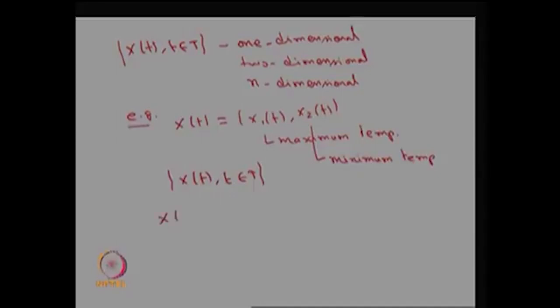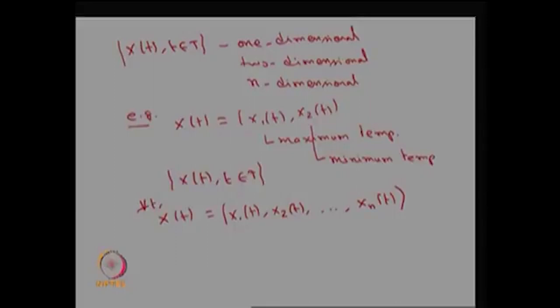In general, you can define an n-dimensional stochastic process where for every fixed t you have a random vector x(t) = (x1(t), x2(t), ..., xn(t)) — an n-tuple in which each element is a one-dimensional random variable for fixed t. This forms an n-dimensional stochastic process. In this course, we will always discuss the one-dimensional stochastic process.